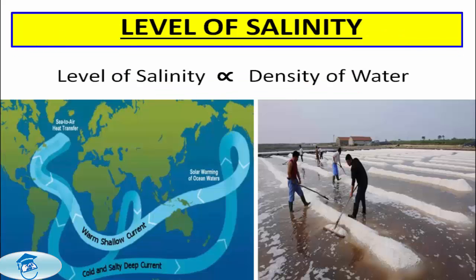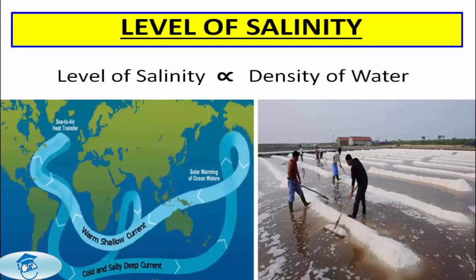First, the level of salinity. The level of salinity is directly proportional to the density of water — the higher the salinity, the denser the water. Water with less salinity therefore flows over the denser saline water. For example, the Mediterranean Sea is more saline than the Atlantic Ocean, so the Atlantic Ocean water flows into the Mediterranean Sea's surface.